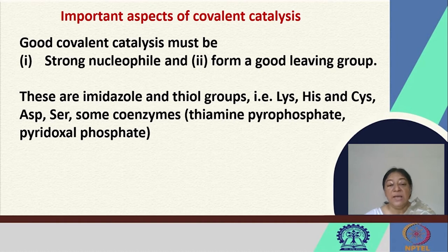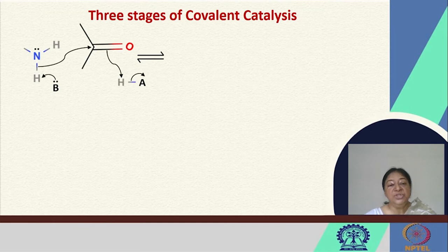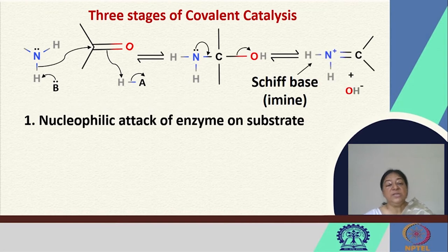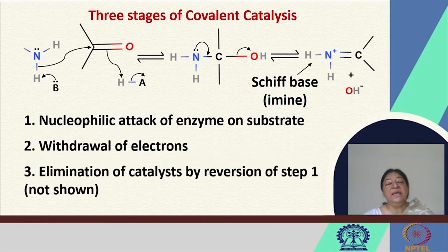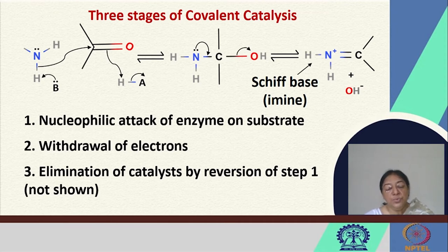We also have imidazole and thiol groups, and specific coenzymes like thiamine pyrophosphate and pyridoxal phosphate. There are three stages of covalent catalysis: first, linkage and covalent bond formation; then, a catalytic reaction; and subsequently, release — a nucleophilic attack of the enzyme on the substrate resulting in covalent bond formation, followed by cleavage of that bond to bring the enzyme back to a state where it can bind another substrate.